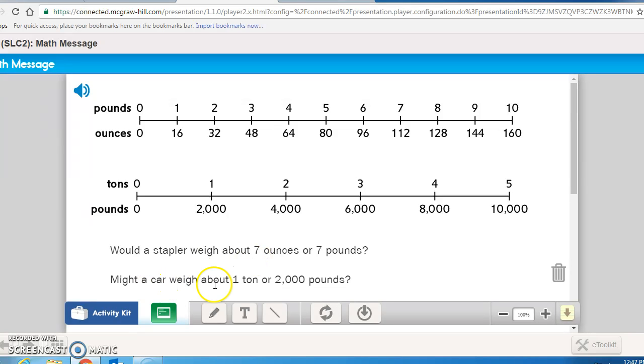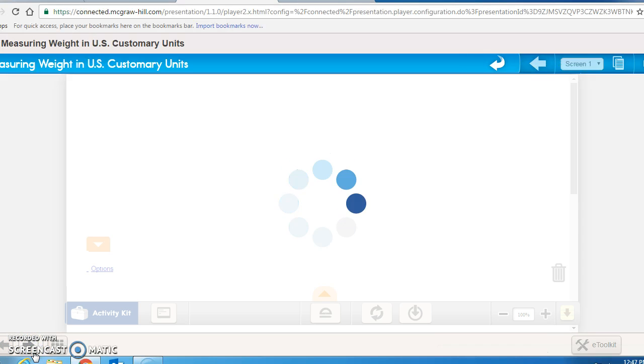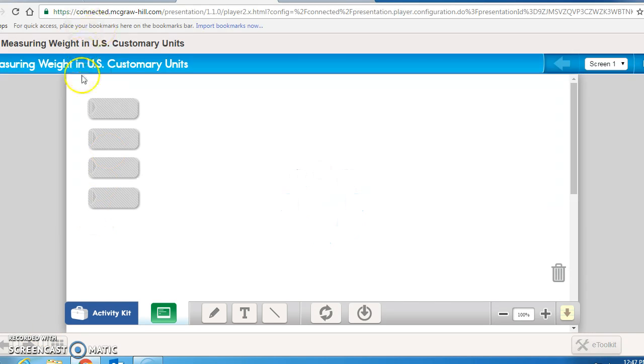Might a car weigh 1 ton or 2,000 pounds? You should be looking at this scale and seeing that that's kind of a trick question because 1 ton is 2,000 pounds. So that is the same weight. Be prepared always to explain your answers if I ask. So weight can come in tons, pounds, and ounces in the U.S. customary system.